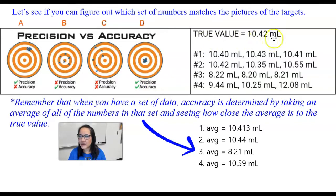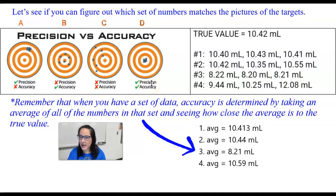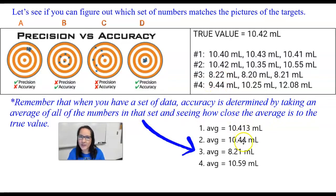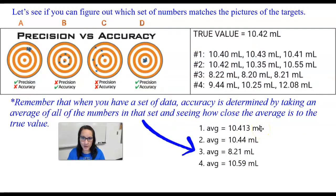Let's say the true value is 10.42 milliliters, and we have four sets of data. Which of these data sets matches the different targets? One helpful approach is to take each set of data, get the average of all the numbers, and then compare that average to the true value. Looking at data set number one, the average is 10.42, so that makes it accurate. The measurements are also all very close to one another, so this is both accurate and precise.